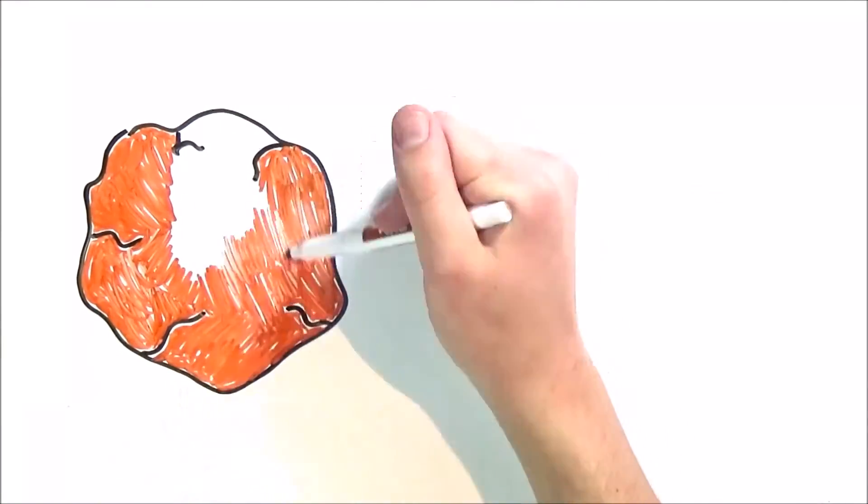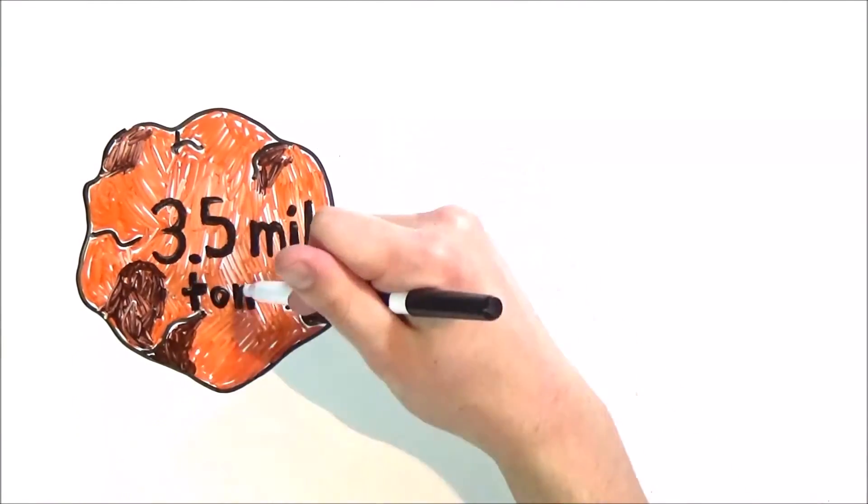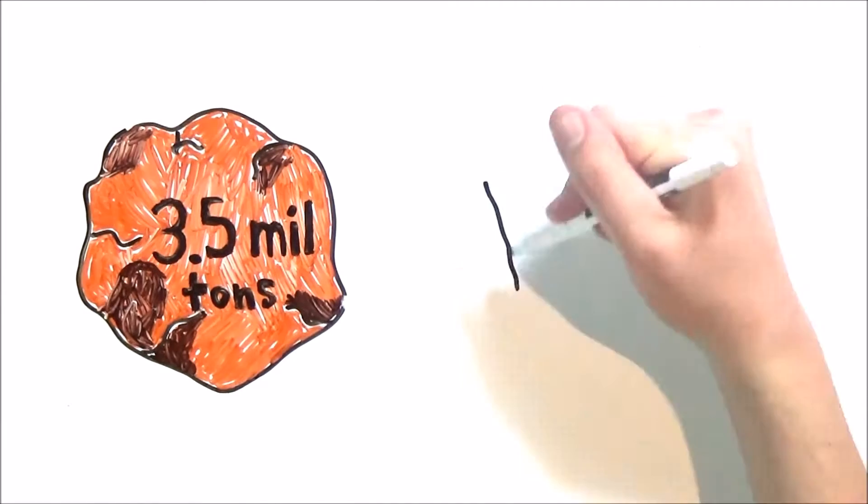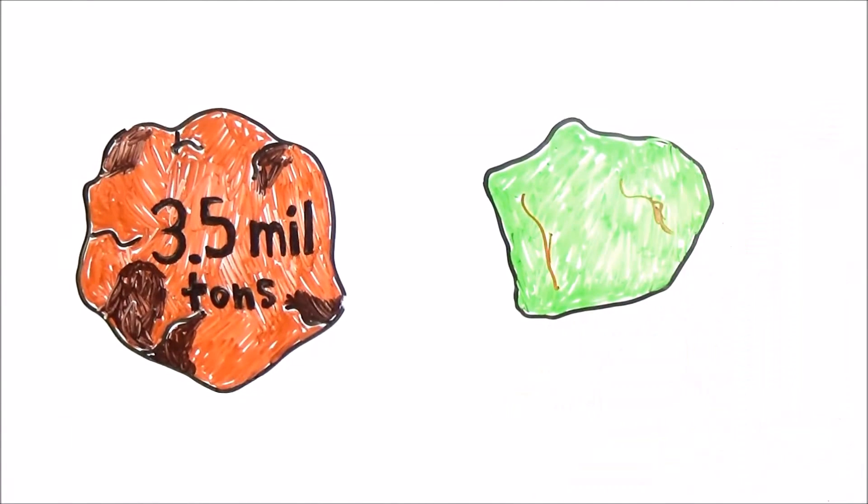Each year, 3.5 million tons of rock are blasted to mine diamonds, and the diamonds recovered from mining and sifting are crude and look nothing like real diamonds until they are cut and polished.